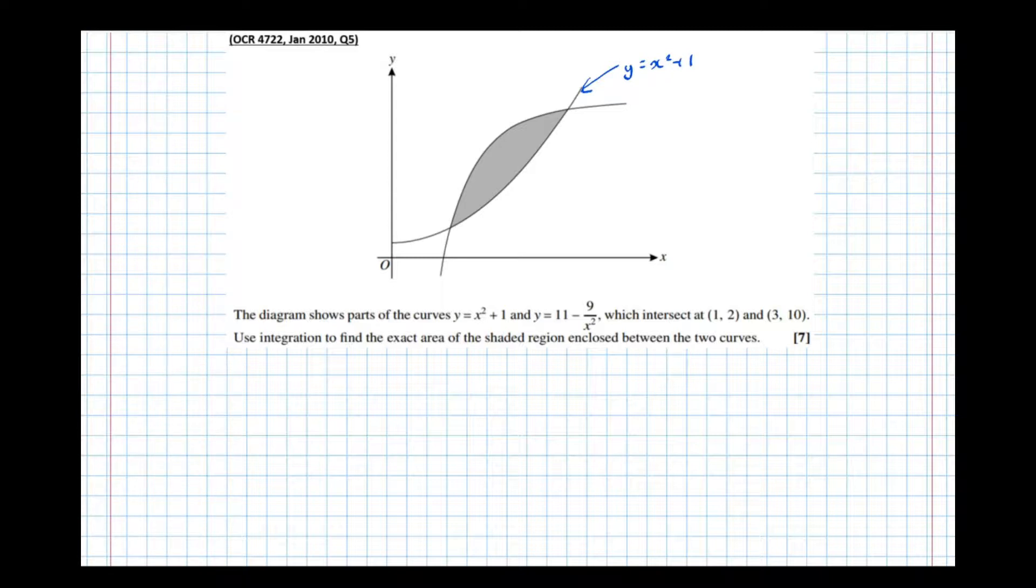It's always a good idea to label these things in an exam. So the other one must be the other curve, which is y equals 11 minus 9 over x squared. It tells us that they intersect at 1, 2 and 3, 10.